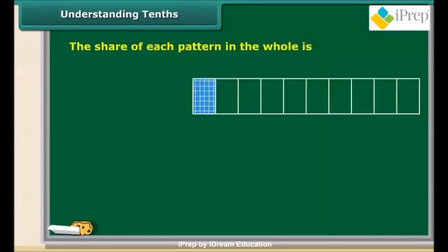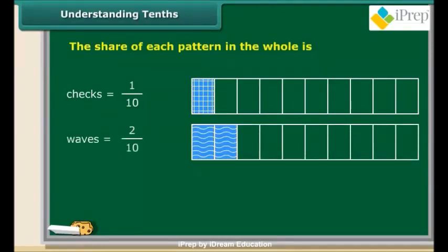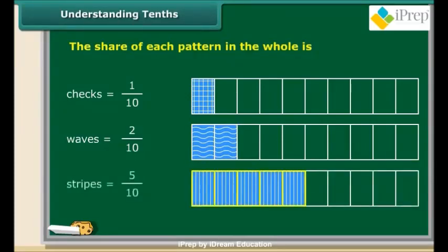Consider the fraction bars. In the first bar, only one out of the ten blocks has checks. In the second bar, only two out of the ten blocks have waves. Similarly, in the third bar, five out of the ten blocks have stripes. In all these cases, we express the share of the patterned blocks to the total blocks as a fraction with denominator 10. Such fractions are called tenths.